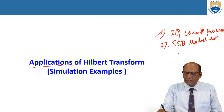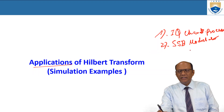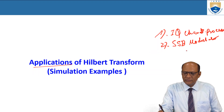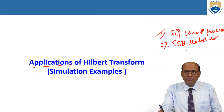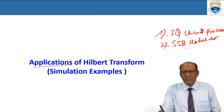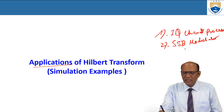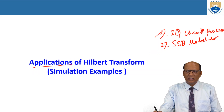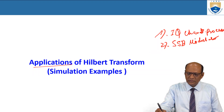In single sideband modulation, the purpose is to save power when using amplitude modulation. We do not transmit any carrier here because the carrier contains no information. We transmit only the sideband which contains the message information. To generate SSB we need Hilbert transform, that means orthogonal channels. So those are the two main applications.